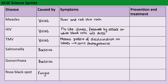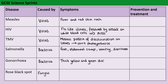Salmonella causes food poisoning, so that leads to fever, abdominal cramps, vomiting and diarrhea. Gonorrhea is a sexually transmitted infection and it causes a thick yellow or green discharge from the penis and vagina, and also pain when urinating.